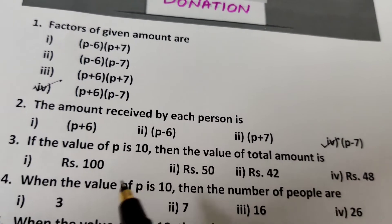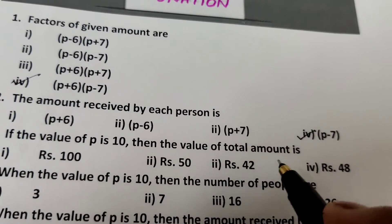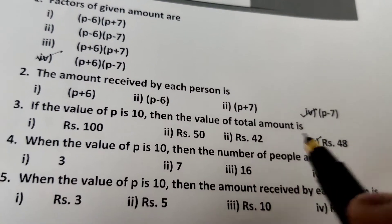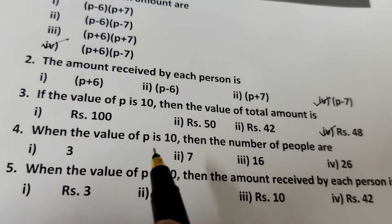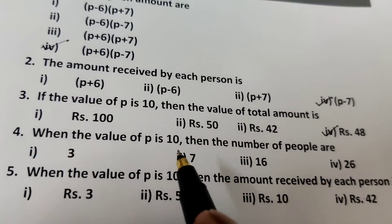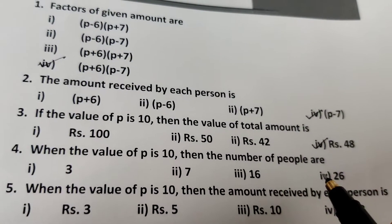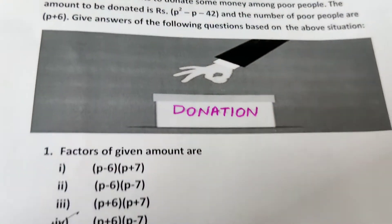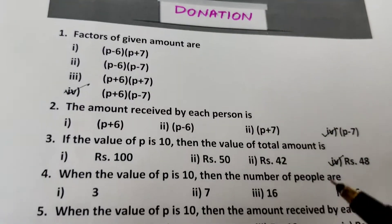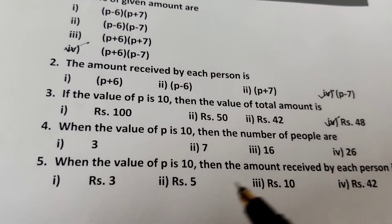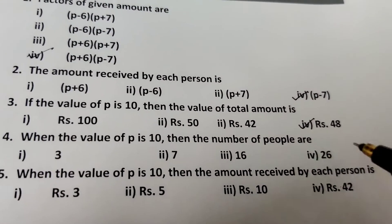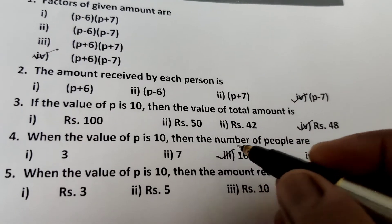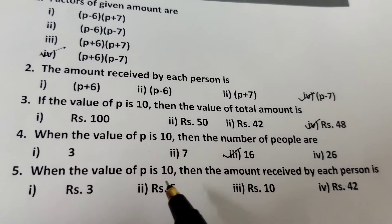Question 4: When the value of p is 10, what is the number of people? The number of people is p plus 6, so substituting p equals 10 gives 10 plus 6 equals 16. The number of people is 16.